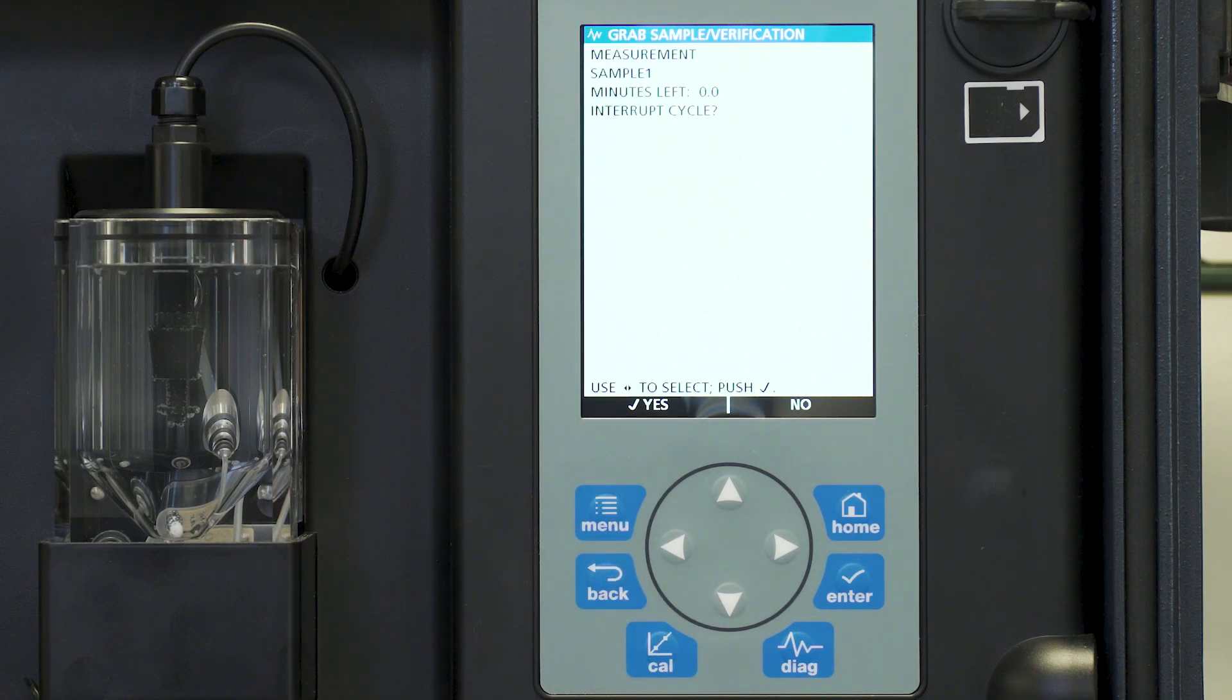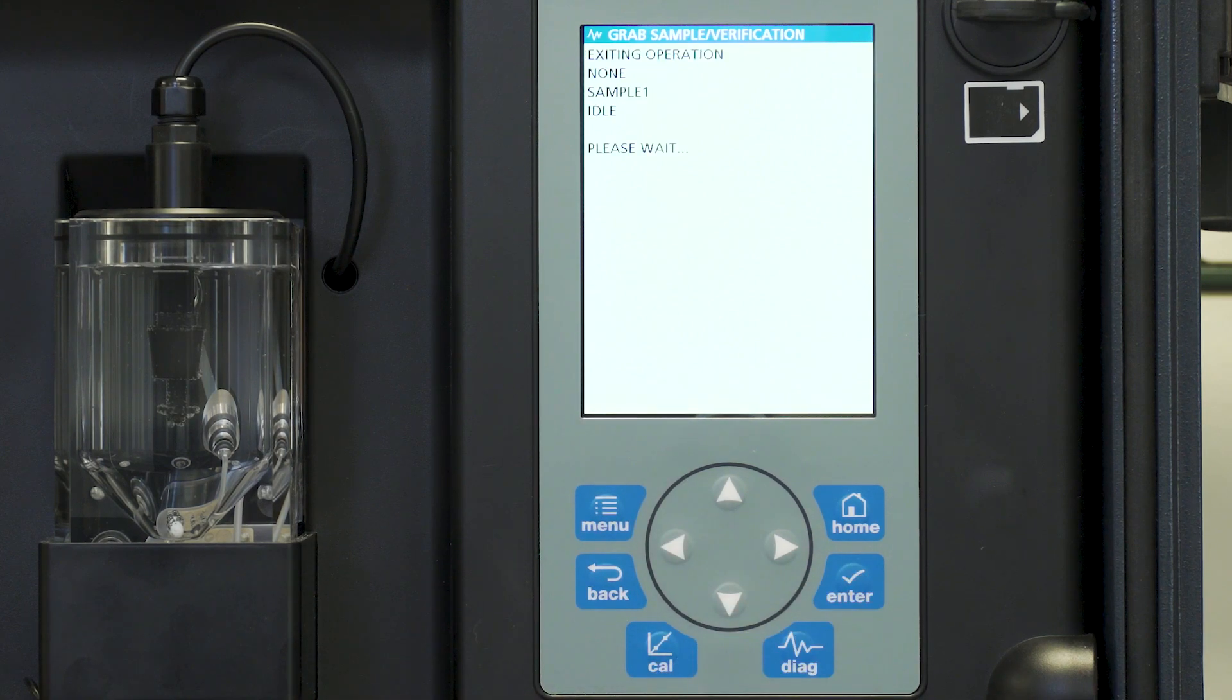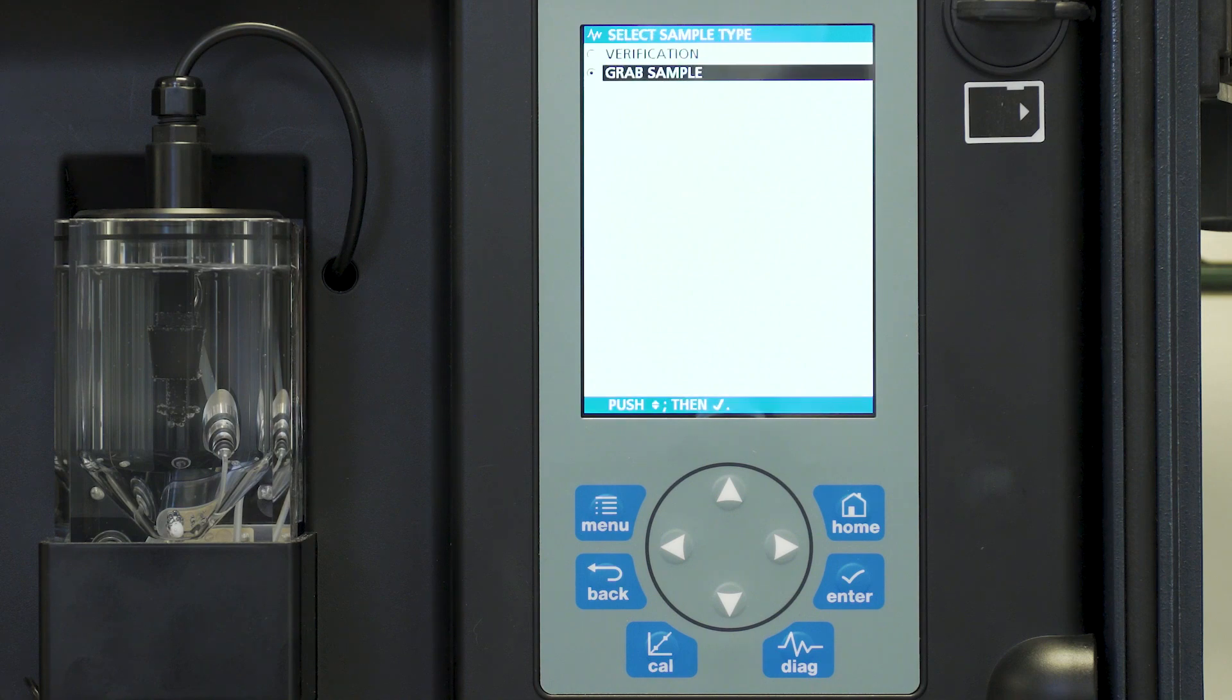We want to interrupt that mode so we can go directly to our grab sample. So we're going to choose yes and press enter. It is now exiting the operation. It's asking us if we're going to do a verification with a known standard or grab sample. Today we're going to choose grab sample.